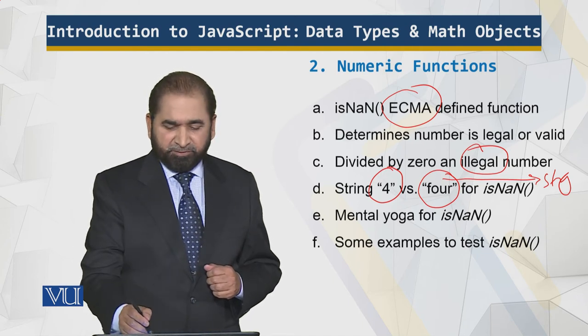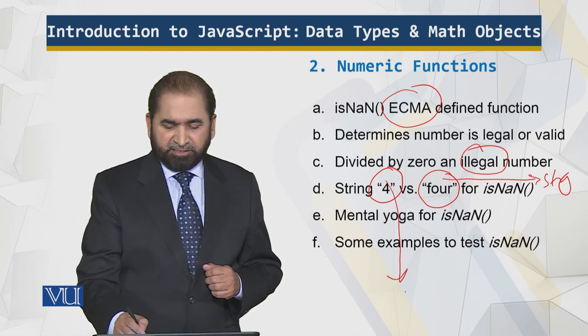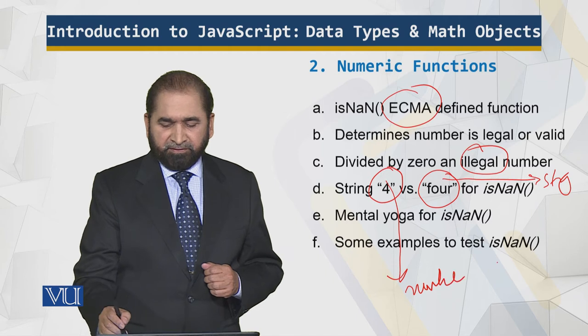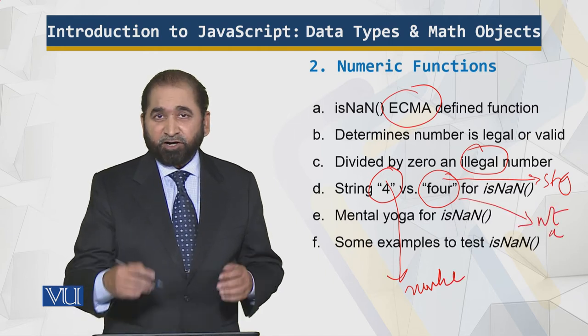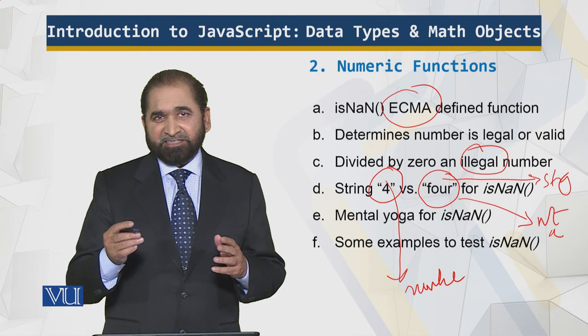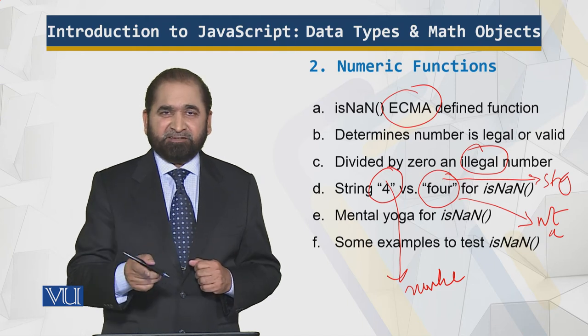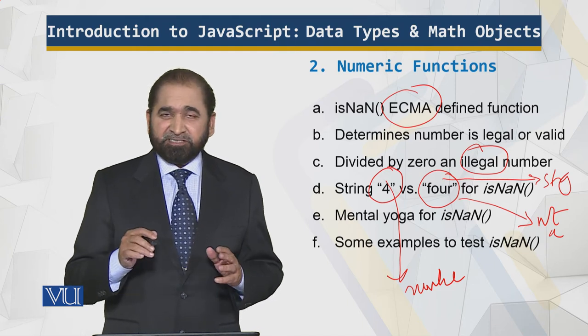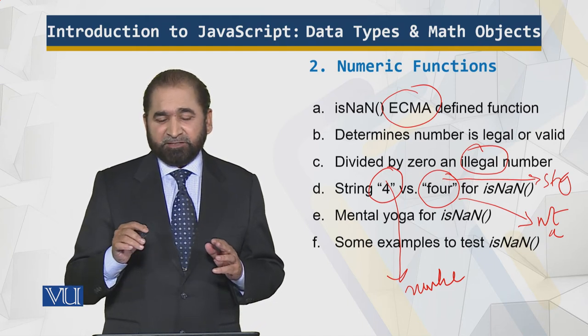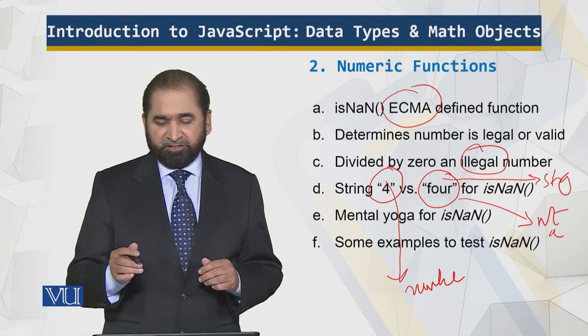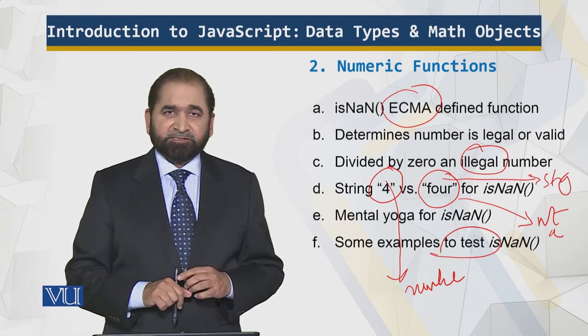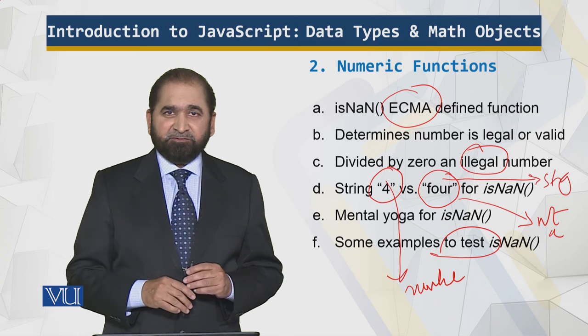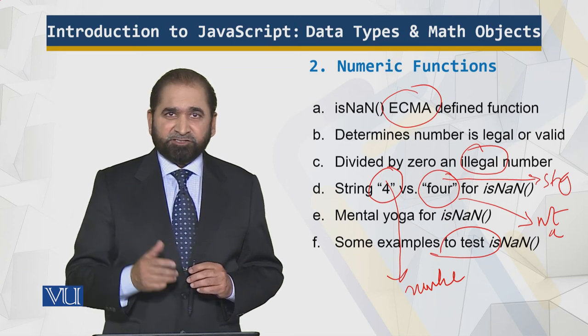So how does is not a number work on them? This will be treated as a number and this is not a number. So how do you interpret them? It requires a certain amount of mental yoga as I have mentioned. Because this is going to confirm whether it's a number or it's not a number. And over here we look at some examples to test this, two examples and I believe then it will become clear.